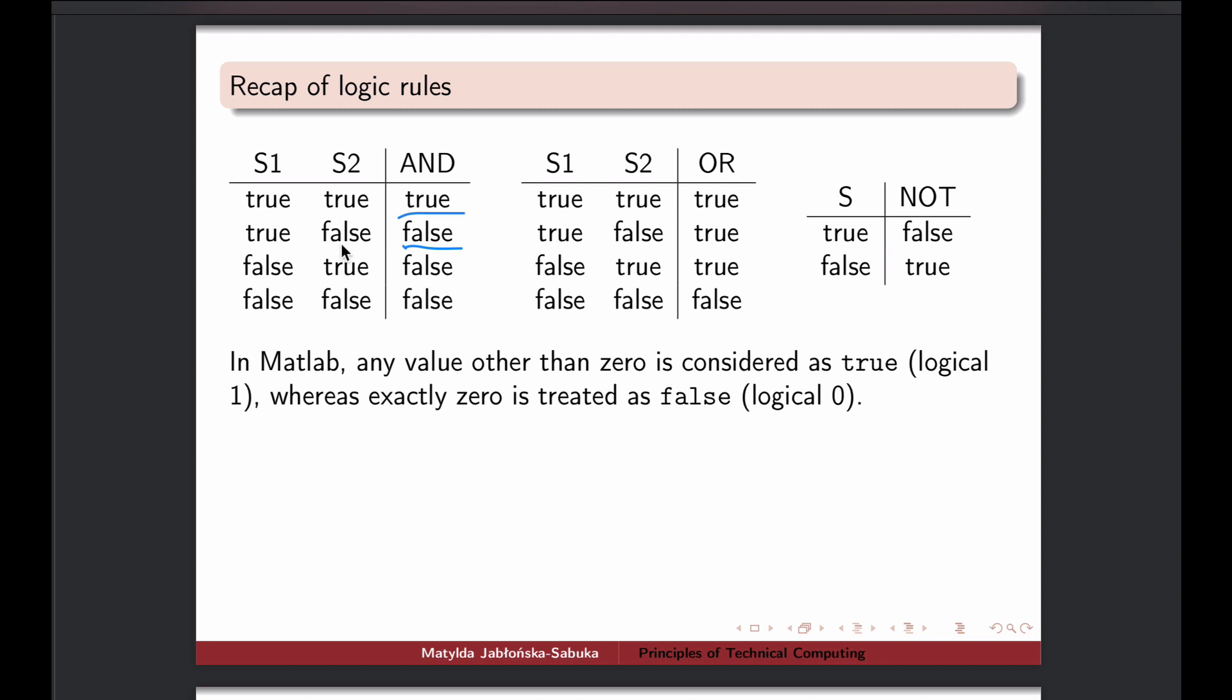Two sentences combined with AND can only be as a whole true if both parts are true. So if the second is false or first one, either one, then we get a false result. And of course, consequently, if both parts of the sentence are false, then the combined one is false as well.